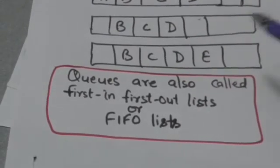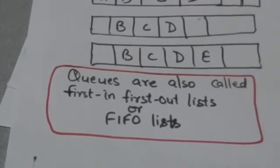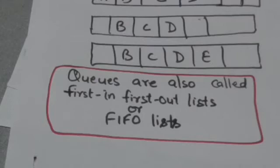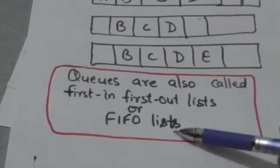The element which is inserted first in the queue will be the first element to be deleted from the queue. That's why queues are also called first in first out lists, or FIFO lists.